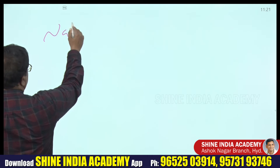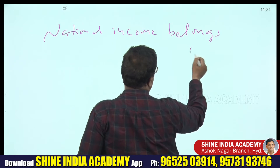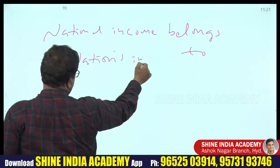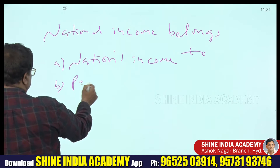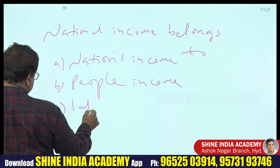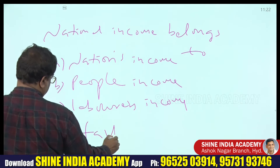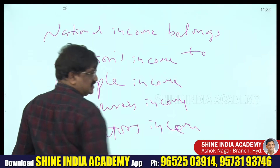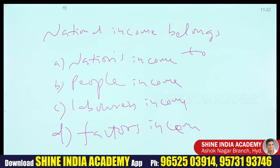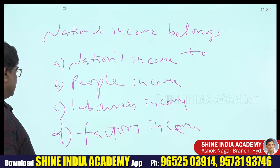National income belongs to — is it A) a nation's income, B) people's income, C) laborers' income, or D) factors' income? Looking at the words, we have nations, people, laborers, and factors. The right answer is factors.